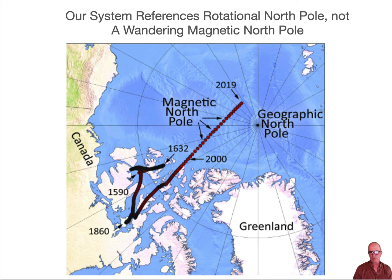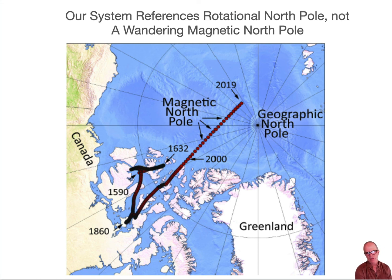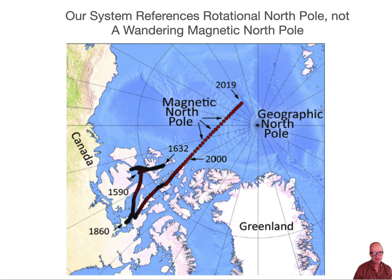Finally, we don't use magnetic north in this system. All of our references in the spherical system are to the geographic north and south poles, not the magnetic north and south poles. The magnetic poles wander around and are hard to locate, which is one of many reasons we don't use them. You might use magnetic north with a compass, but anymore you're just using GPS.